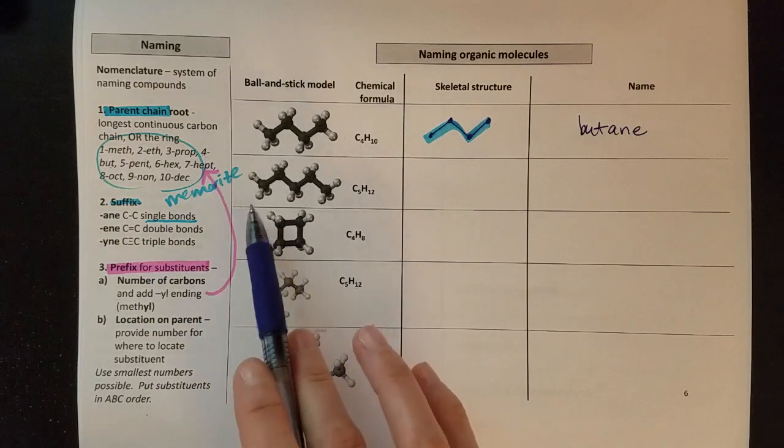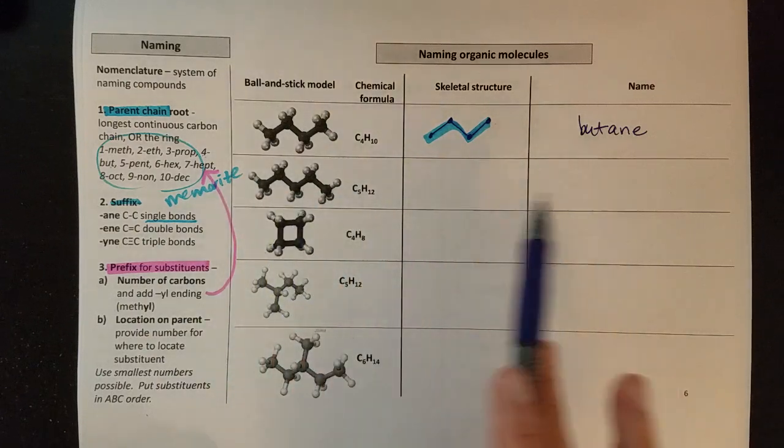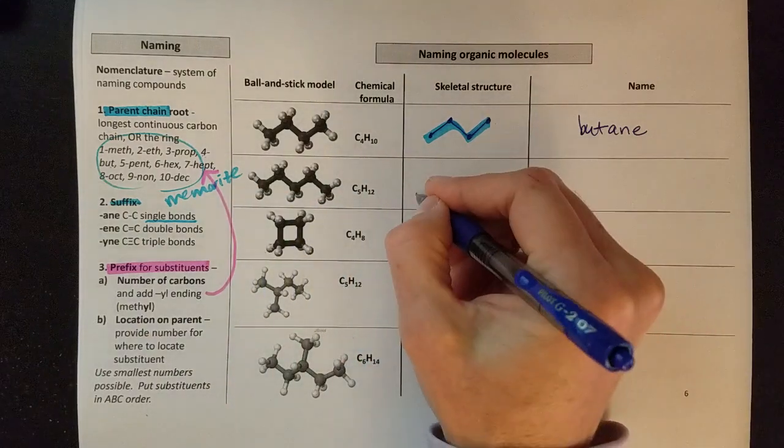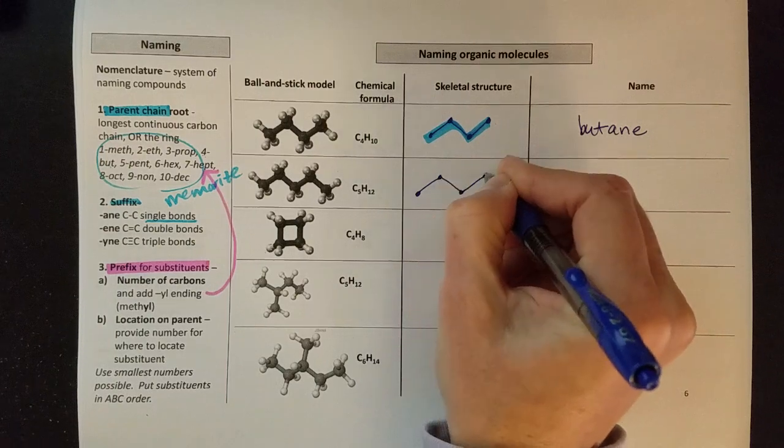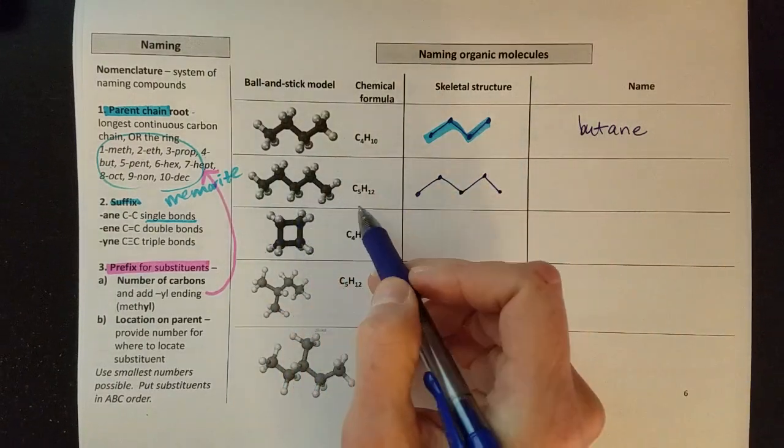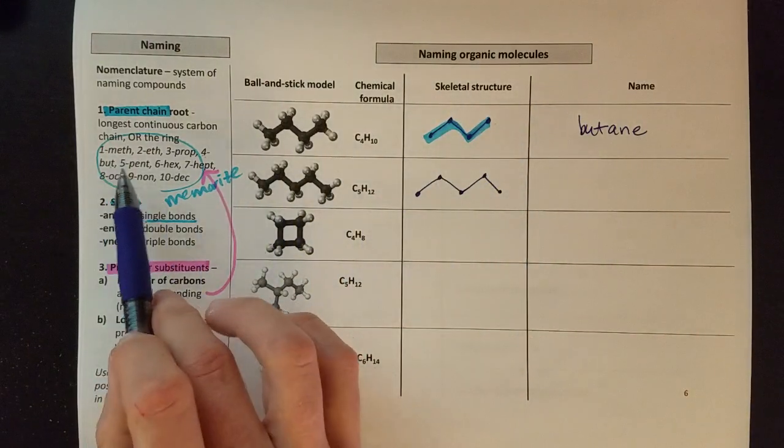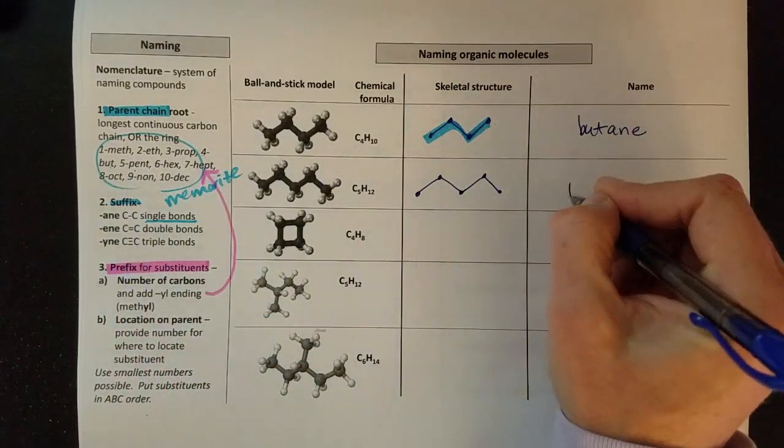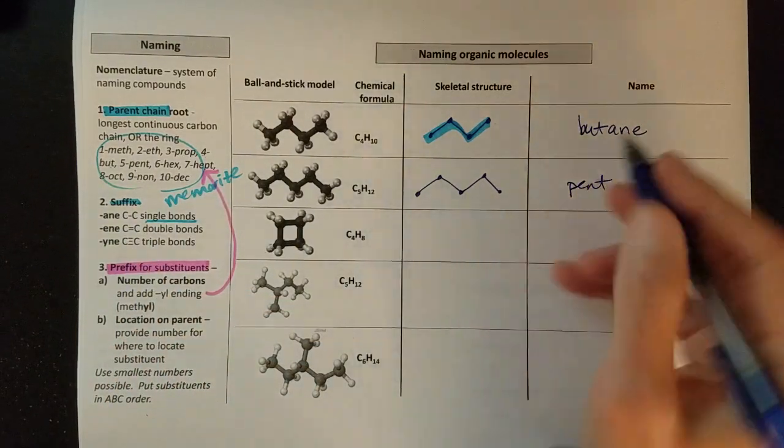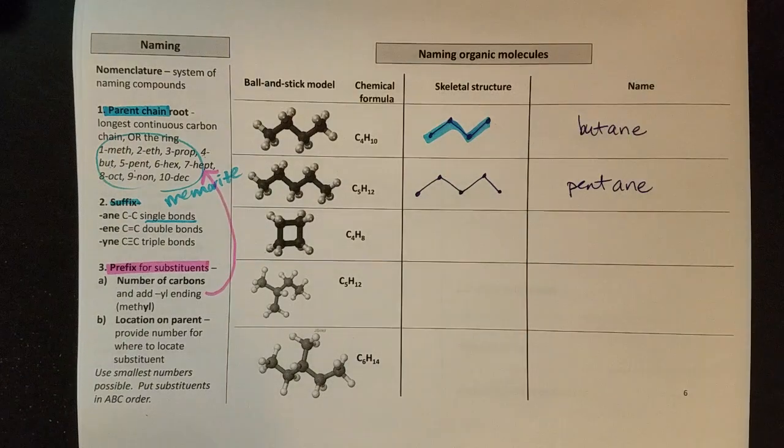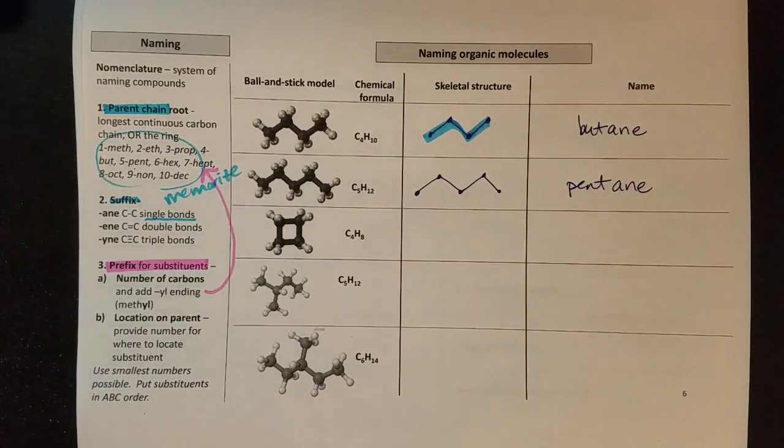Next one down, we've seen this molecule but now looking at how to name it. Skeletal structure: one, two, three, four, five. I'm just pulling those carbons out. I have five carbons so that's going to be pent, and then it's all single bonds so that will be ane. So this is pentane.